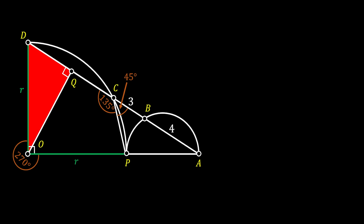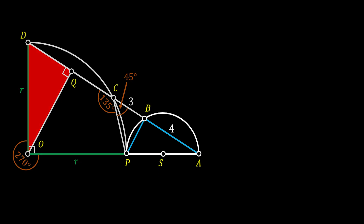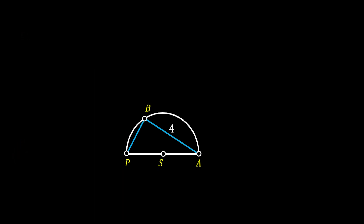Now let's pull a line from point P to point B and set our attention to the line AB. We will mark the center of our half circle as S. We can notice that the angle at point S is a 180 degree angle.